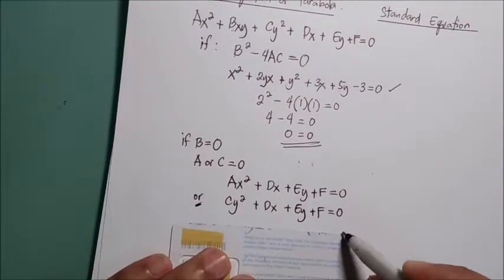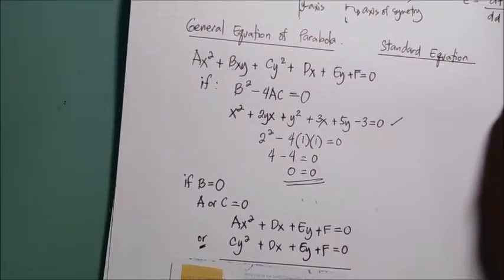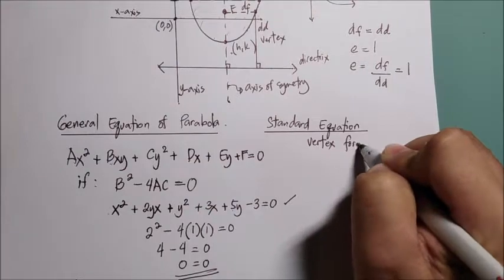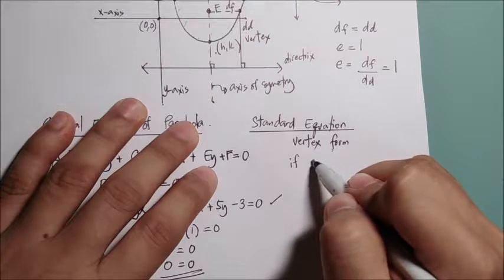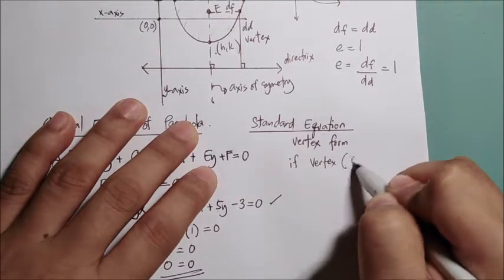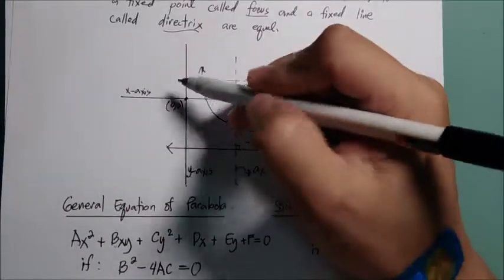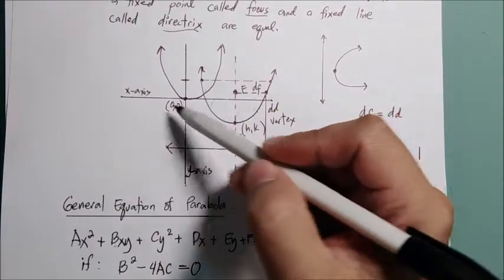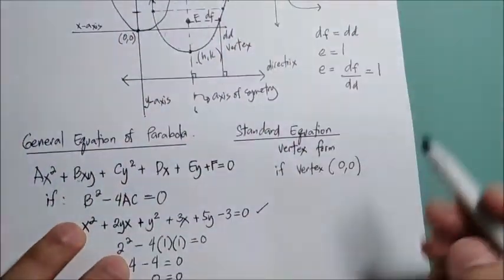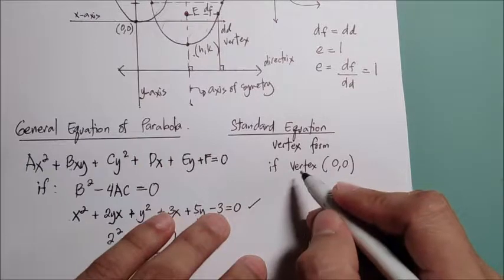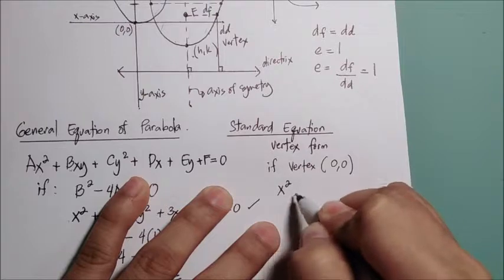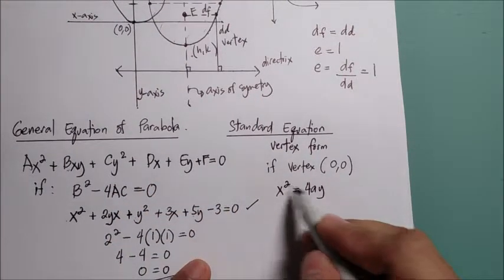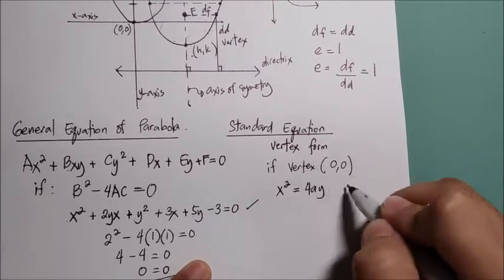The standard equation of a parabola — also called the vertex form — when the vertex is at the origin (0, 0): the parabola can open upward, downward, to the left, or to the right. If the standard form is x² = 4ay, the parabola opens upward. If the form is x² = −4ay, the parabola opens downward.